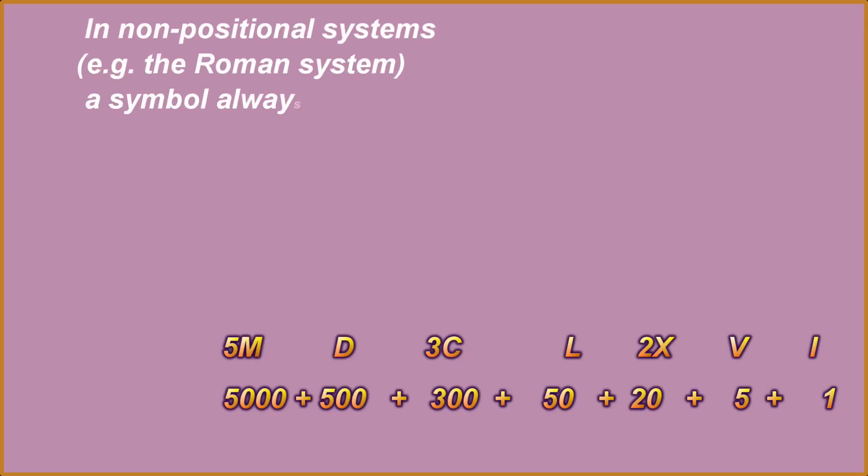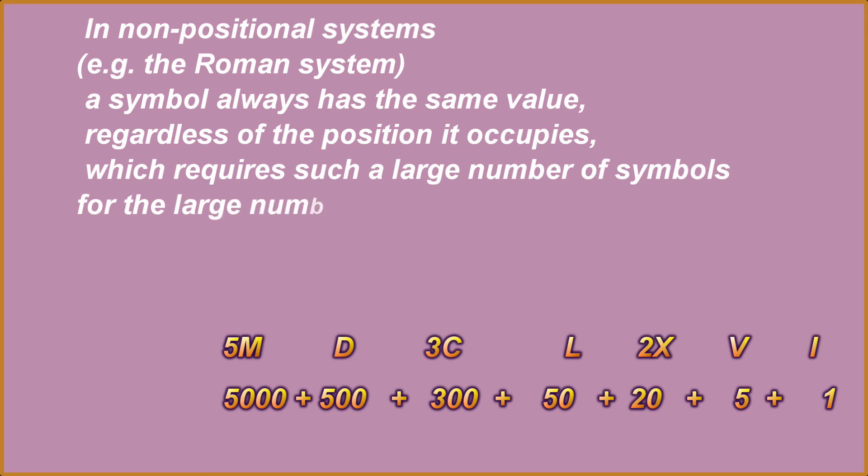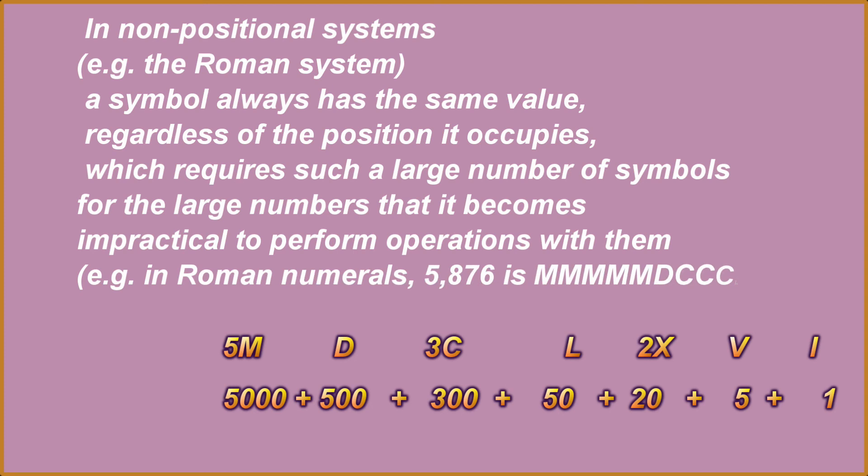In non-positional systems, for example the Roman system, a symbol always has the same value regardless of the position it occupies, which requires such a large number of symbols for large numbers that it becomes impractical to perform operations with them. For example, in Roman numerals, 5876 is MMMMMMDCCCLXXVI. So you have seen how difficult it has been.